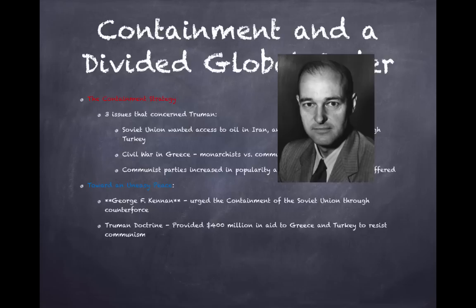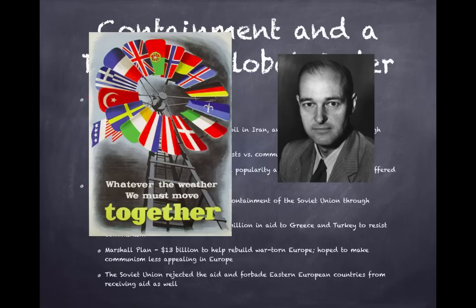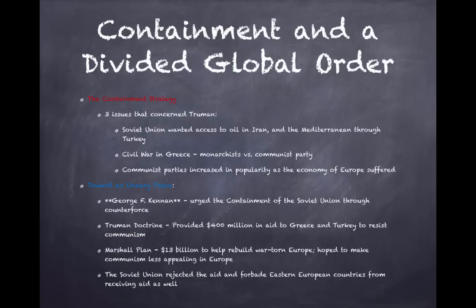The Truman Doctrine provided 400 million dollars in aid to Greece and Turkey to resist communism — a key example of containment. Expect to see an excerpt from the Truman Doctrine as a stimulus on multiple-choice questions. The Marshall Plan, proposed by Secretary of State George Marshall, spent 13 billion dollars to rebuild war-torn Europe, making communism less appealing. The Soviet Union rejected the aid and forbade Eastern European countries from receiving it as well.